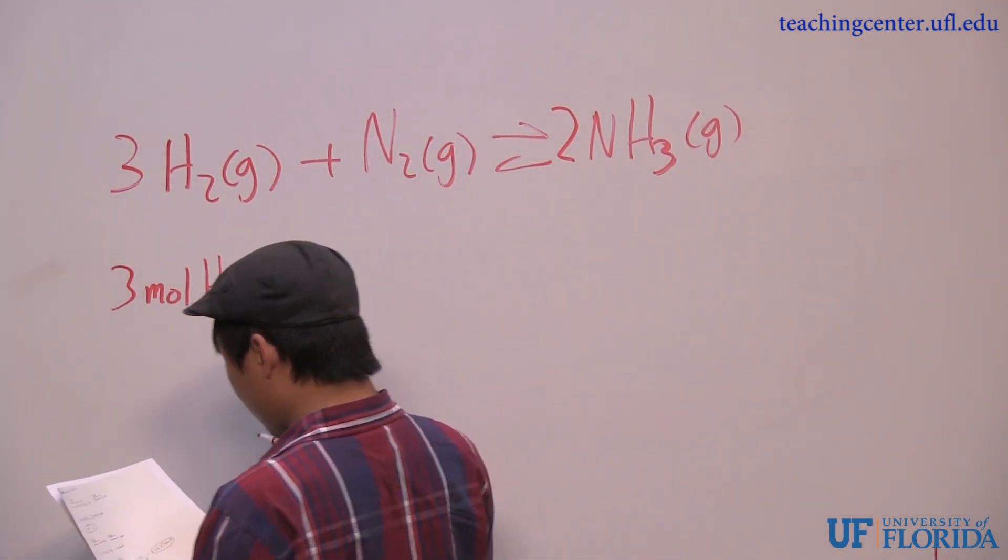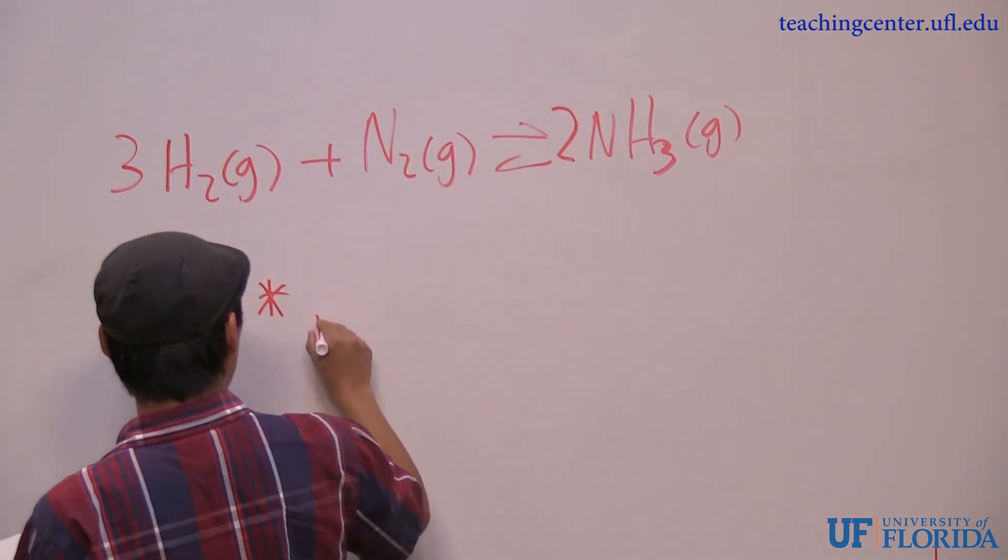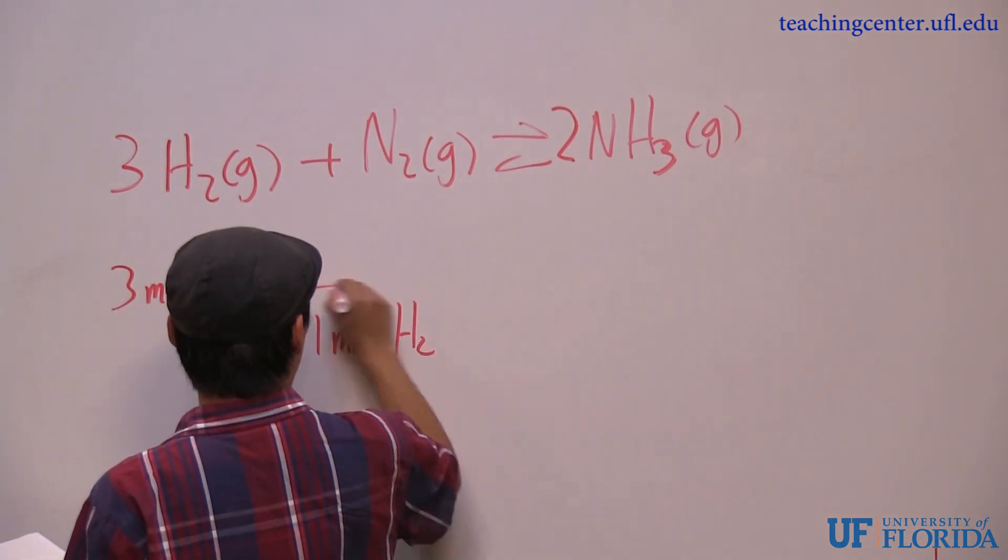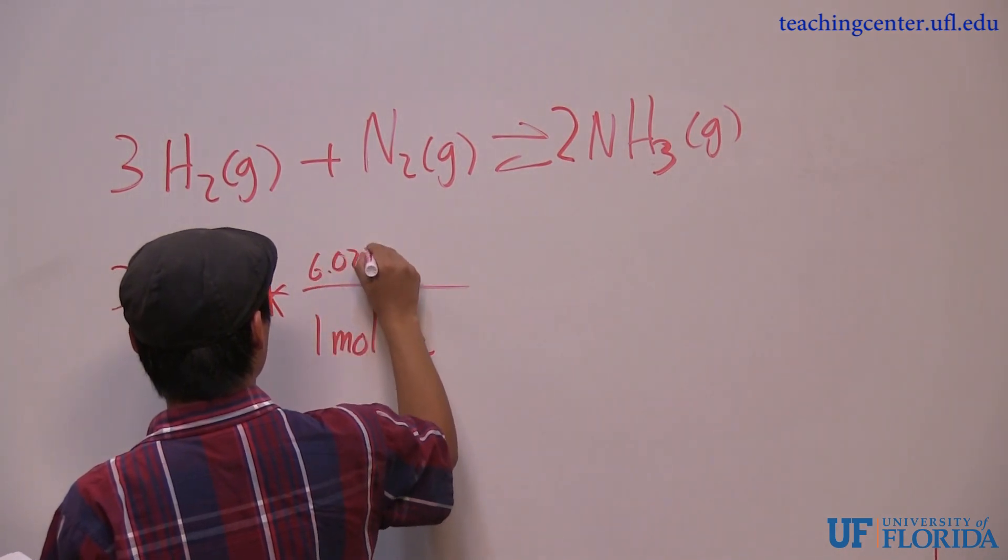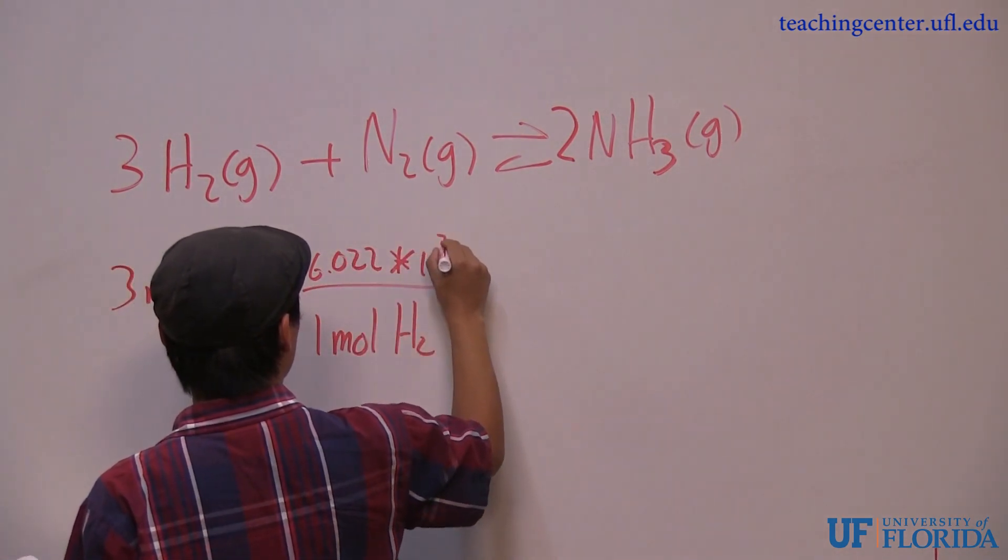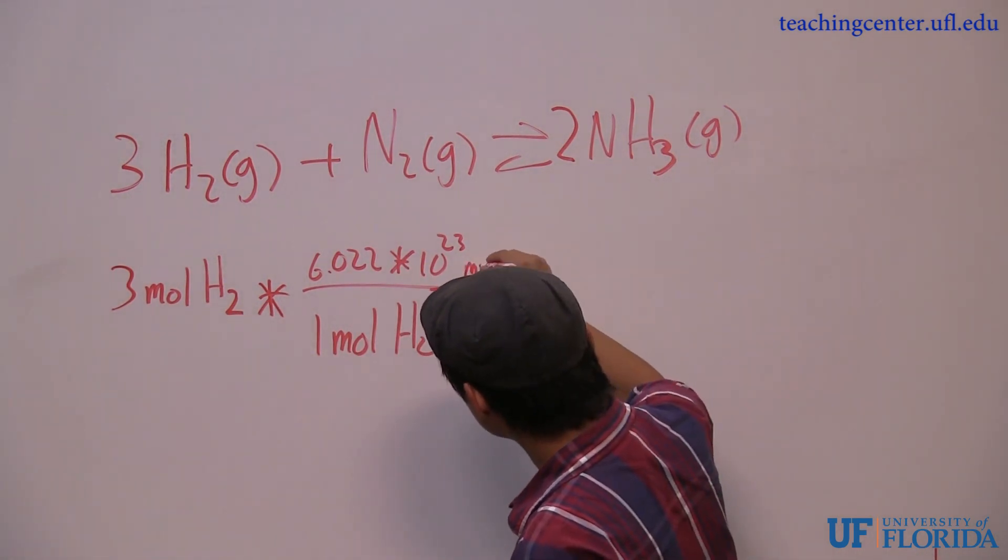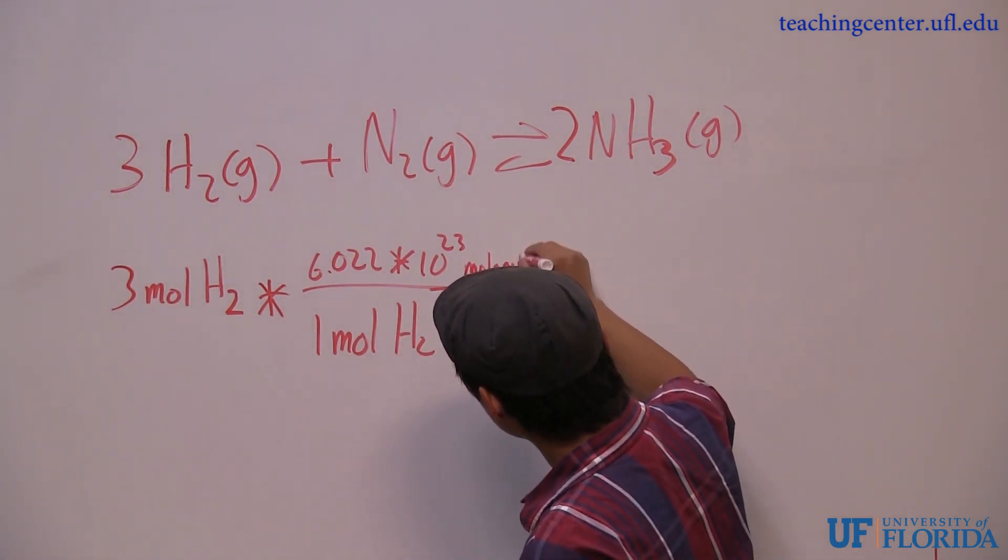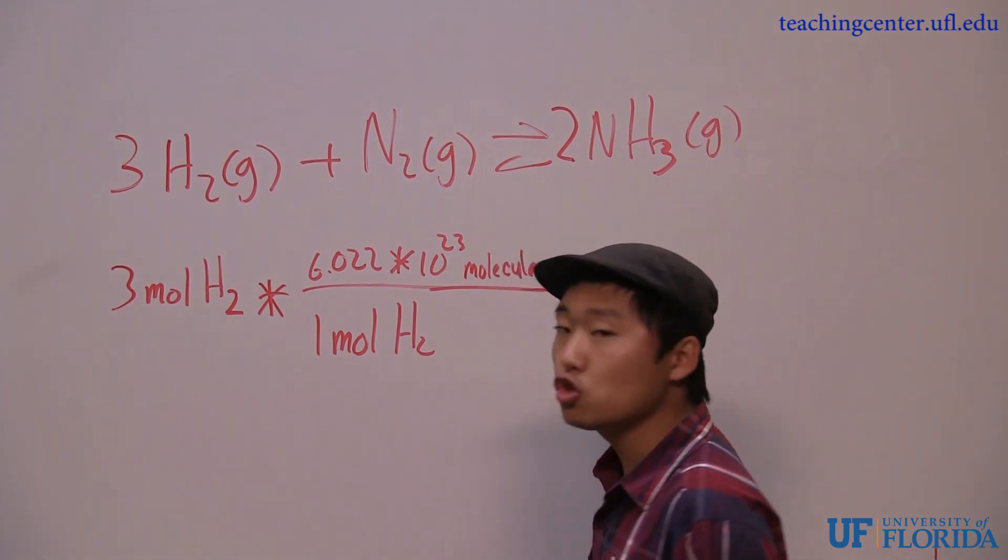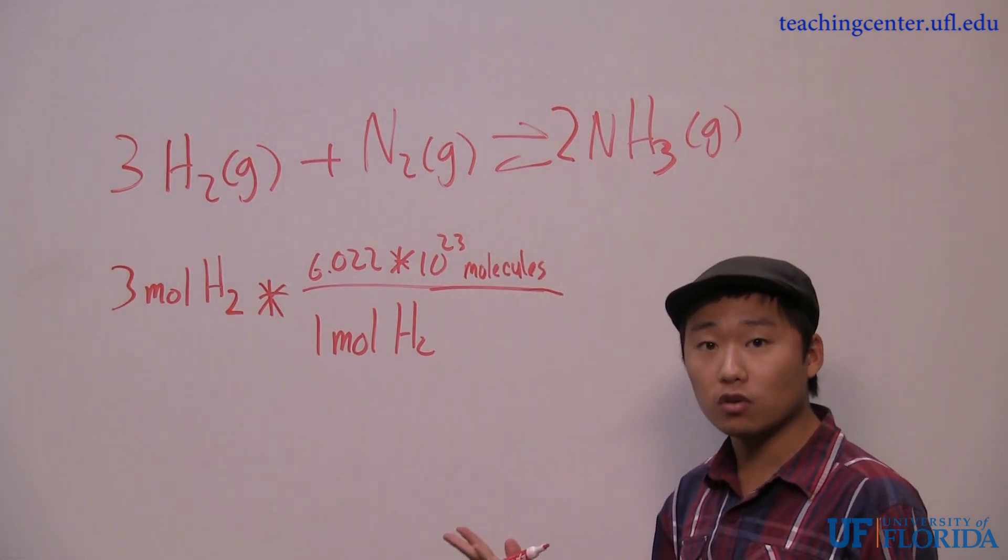Next, for every one mole of H2, there are 6.022 times 10 to the 23rd molecules, not atoms, because H2 is a diatomic. There are two atoms that make up a molecule of H2.